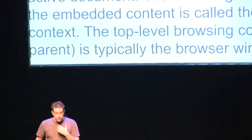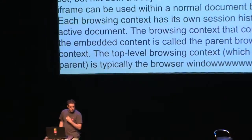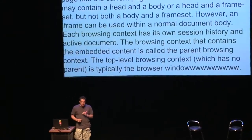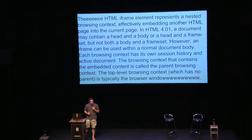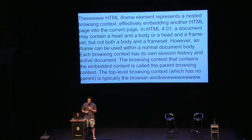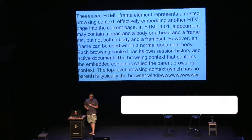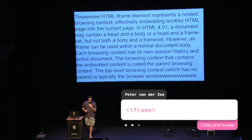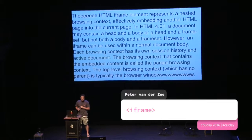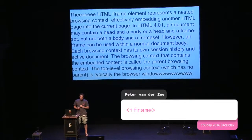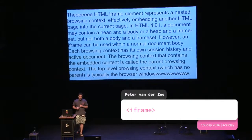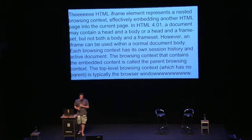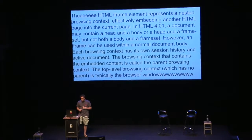The HTML iframe element represents a nested browsing context, effectively embedding another HTML page into the current page. In HTML 4.01, a document may contain a head and a body or a head of the frameset, but not both a body and a frameset. However, an iframe can be used within a normal document body. Each browsing context has its own session history and active document. The browsing context that contains the embedded content is called the parent browsing context. The top-level browsing context, which has no parent, is typically called the browser window.